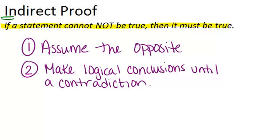And once you reach that contradiction what you've really shown is that the statement cannot not be true so therefore it must be true. Now I know it's hard to really understand what that means without seeing an example so let's look at an example together.